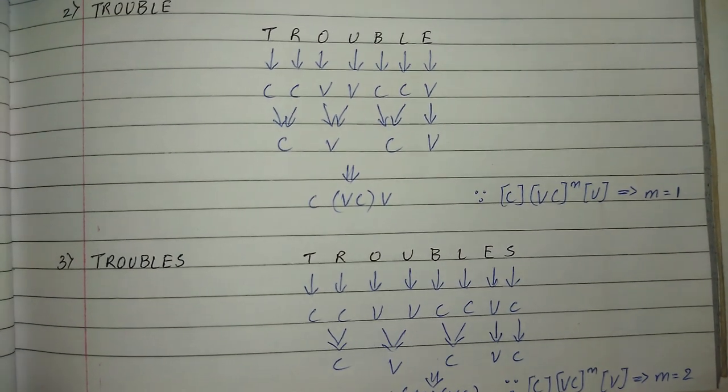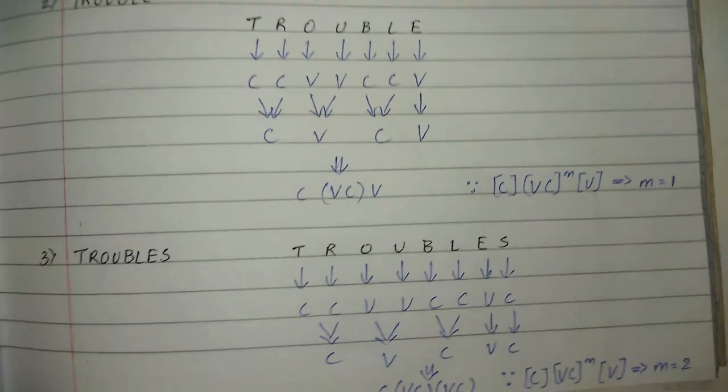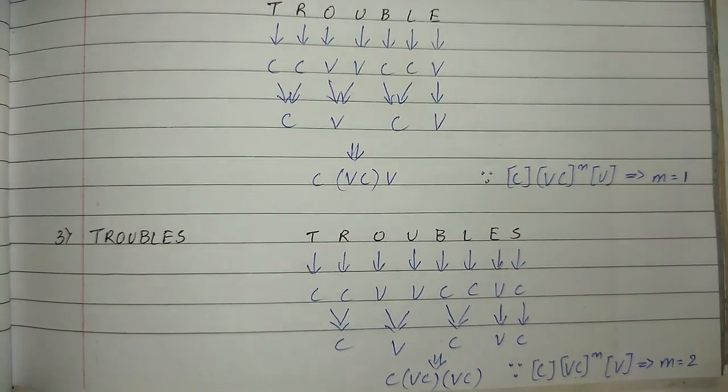Here there is a VC present, so VC raised to m equals one.